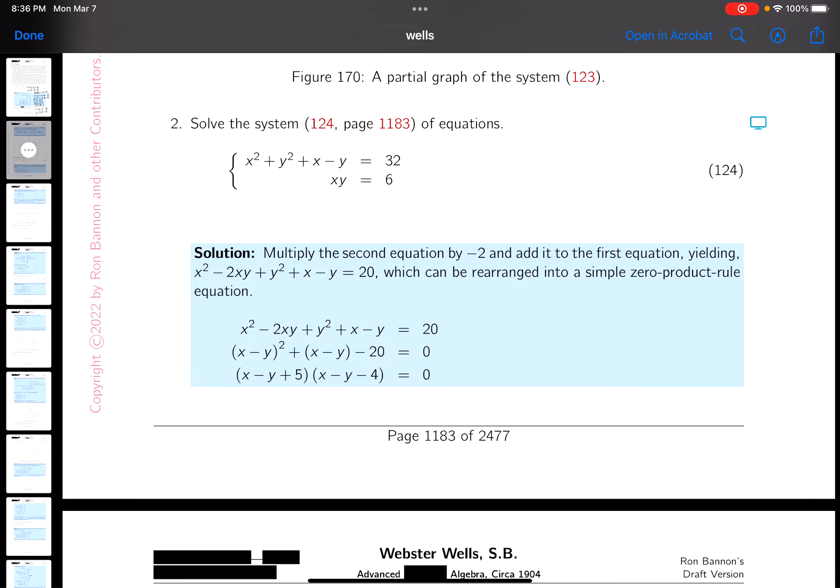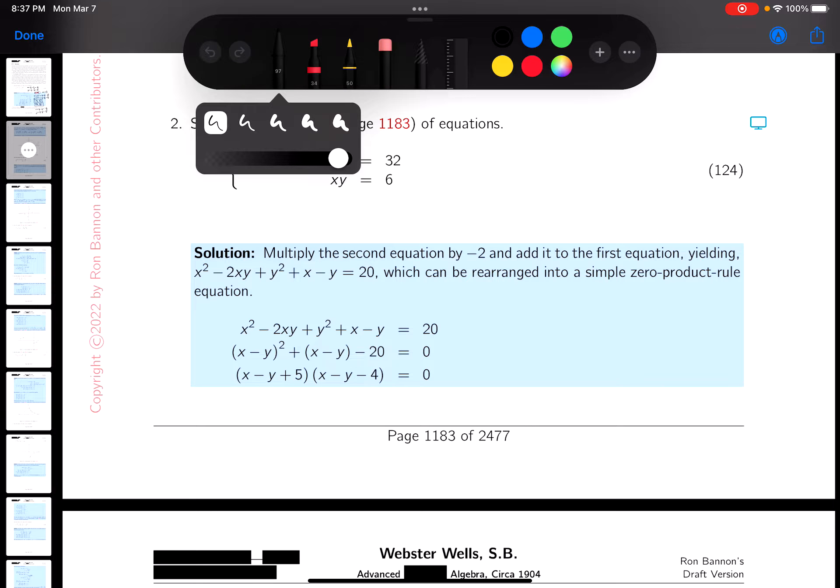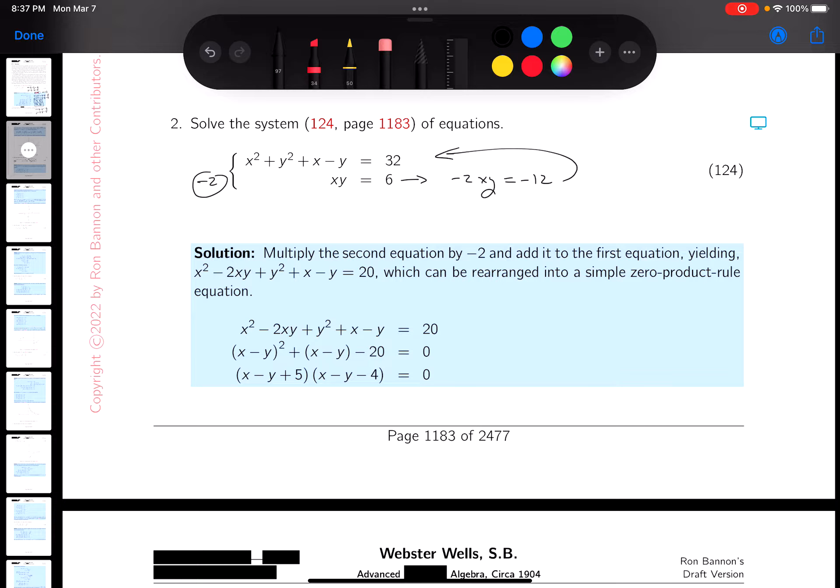Okay, so I'm going to recommend multiplying the second equation by minus 2 and adding it to the first equation. So let me write that down for you. And minus 2. So if you multiply the second equation, you get minus 2xy equals minus 12. And we're going to add that to the first equation.